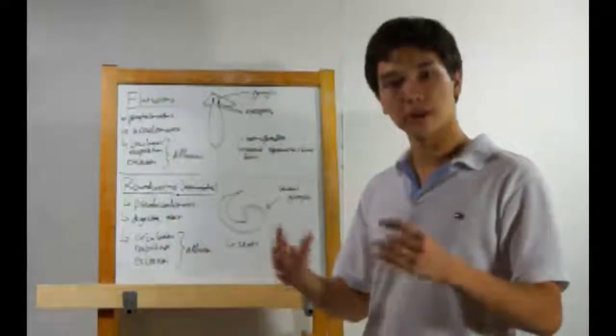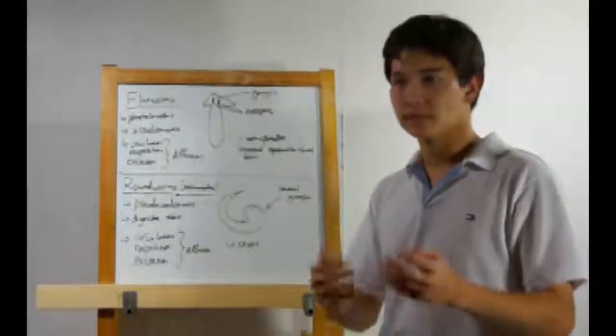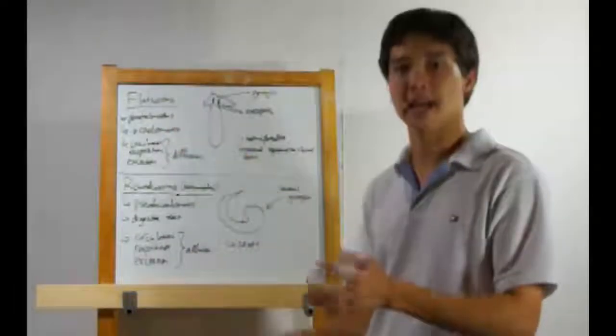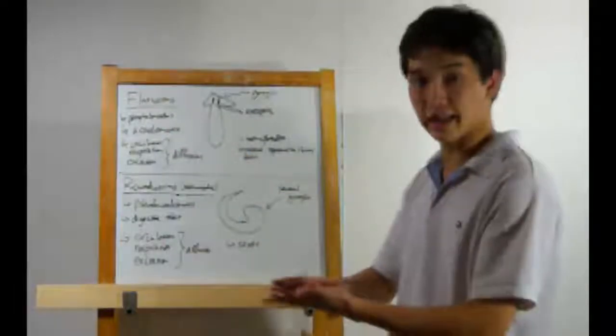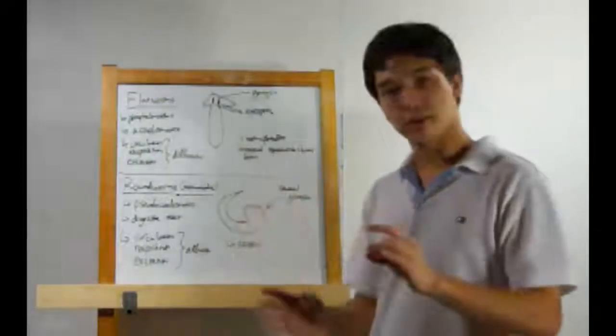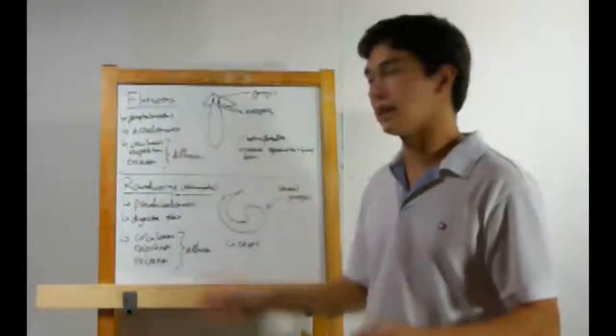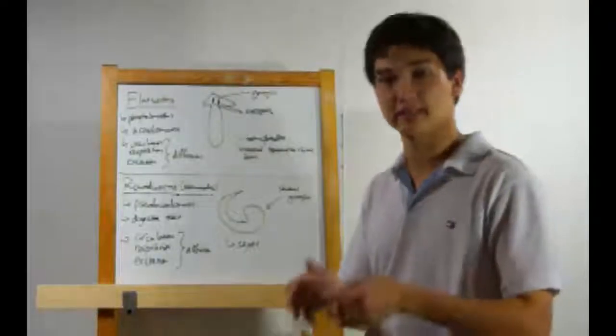First up, flatworms, also known as platyhelminthes. If you want to remember that, plat, flat, it works. And yes, flatworms are quite flat. Now, one thing you should know about these is that they're acoelomates. That means they don't have a body cavity, acoelom.